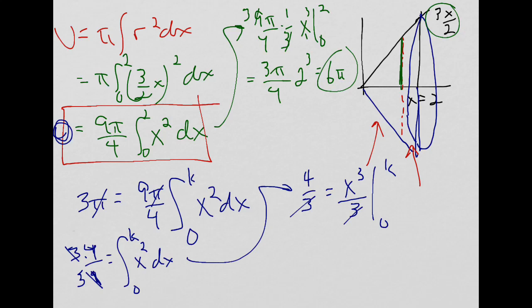And then when I plug in my k, so I get 4 equals k cubed minus 0 cubed, which gives me that 4 equals k cubed. Remember, I'm looking for this k value, so now I just cube root both sides. K equals cube root of 4.